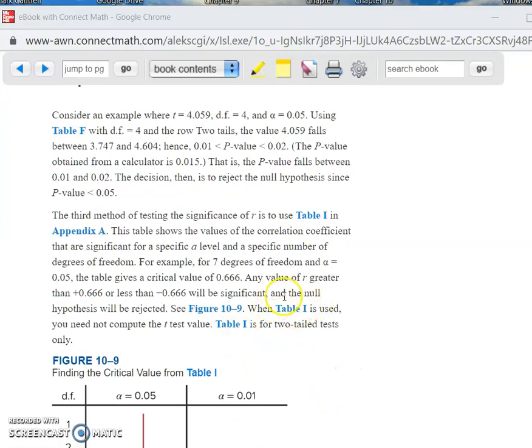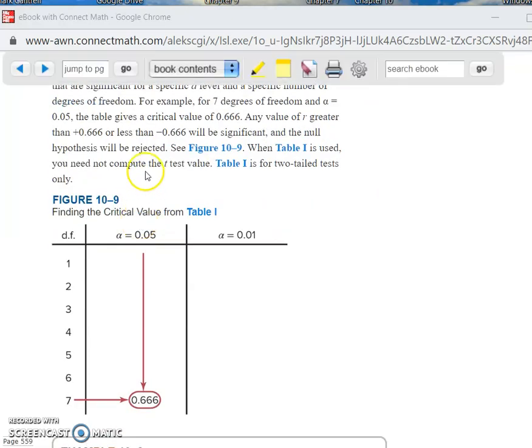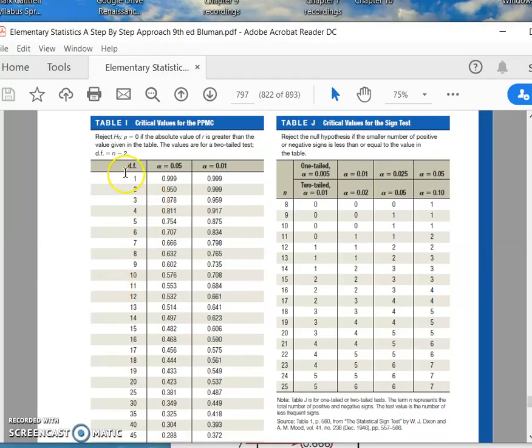So here's another method is just to use a table. This table is table 1 in Appendix A. It shows the values of the correlation coefficient that are significant. So it's real simple. You just look it up. So for 7 degrees of freedom, alpha is 0.05. The table gives a critical value of this. Any value of R greater than that will be significant based on this alpha or based on this alpha, whichever one you're using. So let's take a quick gander at that table. Here it is in the book. So you have degree of freedoms. This is table I. Degree of freedom. You have the two different alphas. If it's bigger than, for whatever degree of freedom you're talking about, if it's bigger than that number that's right in here for that particular alpha, then you reject the null hypothesis.